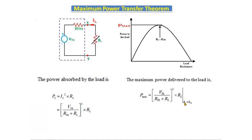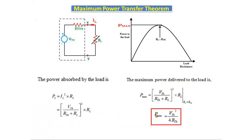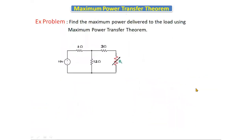The maximum power delivered to the load is given by Pmax equals [Vth divided by (Rth plus RL)] squared into RL. When RL equals Rth, we substitute RL with Rth: Pmax equals Vth squared divided by (Rth plus Rth) squared into Rth. Simplifying, Rth plus Rth equals 2Rth, so Pmax equals Vth squared divided by 4·Rth.